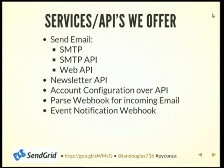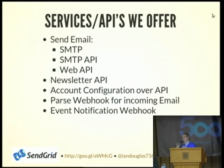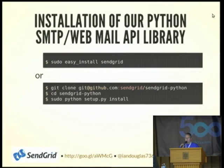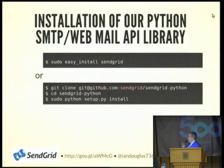Some of the services and APIs that we offer: obviously we let you send email over SMTP. We've also got APIs for newsletter. You can manage your account. You can give us a webhook for parsing incoming emails, and we just send the body of that email back to you over a POST URL. Same with our event notification, which I'll talk about more in just a second. Installing our email API is pretty simple — it's just an easy-install SendGrid, or you can clone our GitHub repo and install it yourself if you're using virtualenv.